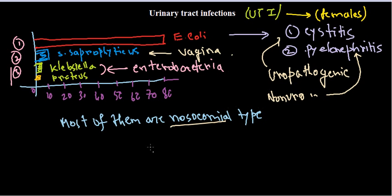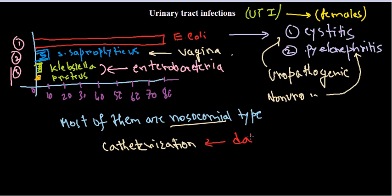Catheterization is a particularly dangerous procedure in hospitals, as it is a major causative factor for urinary tract infections. Catheterization is a prime means for transferring hospital-acquired disease-causing agents like Staphylococcus saprophyticus, Klebsiella, and Proteus from catheters to healthy individuals.